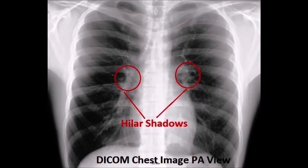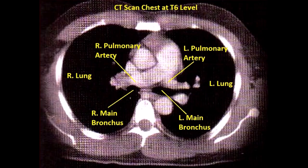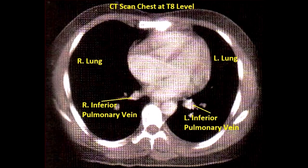This is a chest X-ray, PA view, DICOM image to show the hilar shadows on both sides. This is a CT scan of the chest at the T6 level to show the right and left principal bronchus and the right and left pulmonary artery. And this is a CT scan at T8 level to show the right and left inferior pulmonary veins, which are at a lower level than the arteries.